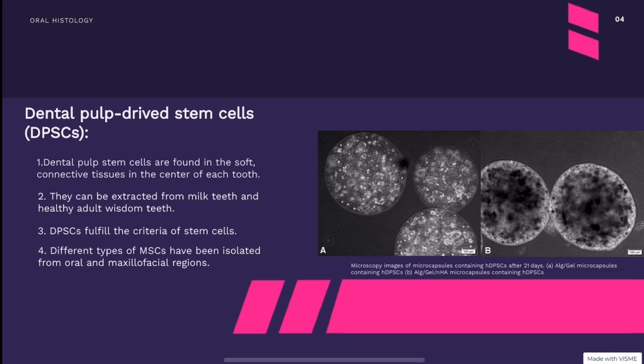Scientists have been trying their best to make advances in treating tooth decay and restoring tooth tissue, with the aim of avoiding painful dental procedures, which are the main fear of most patients. Several recent studies in animal models have demonstrated that procedures involving tooth stem cells appear to regrow the critical living tooth tissues known as pulp, using stem cells derived from dental pulp — known as dental pulp derived stem cells. These cells are found in the soft connective tissue in the center of each tooth and can be extracted from milk teeth and healthy adult wisdom teeth.